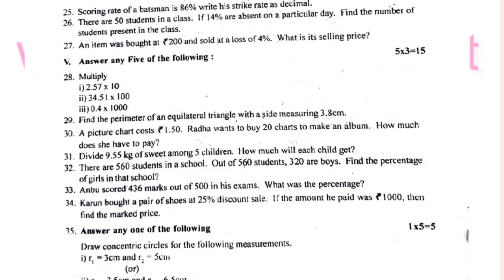Draw the concentration of the following exercises. R1 is equal to 3 cm and R2 is equal to 5 cm. R is equal to 3.5 cm and R2 is equal to 6.5 cm. If you find the 5 marks, you can find the 5 marks.